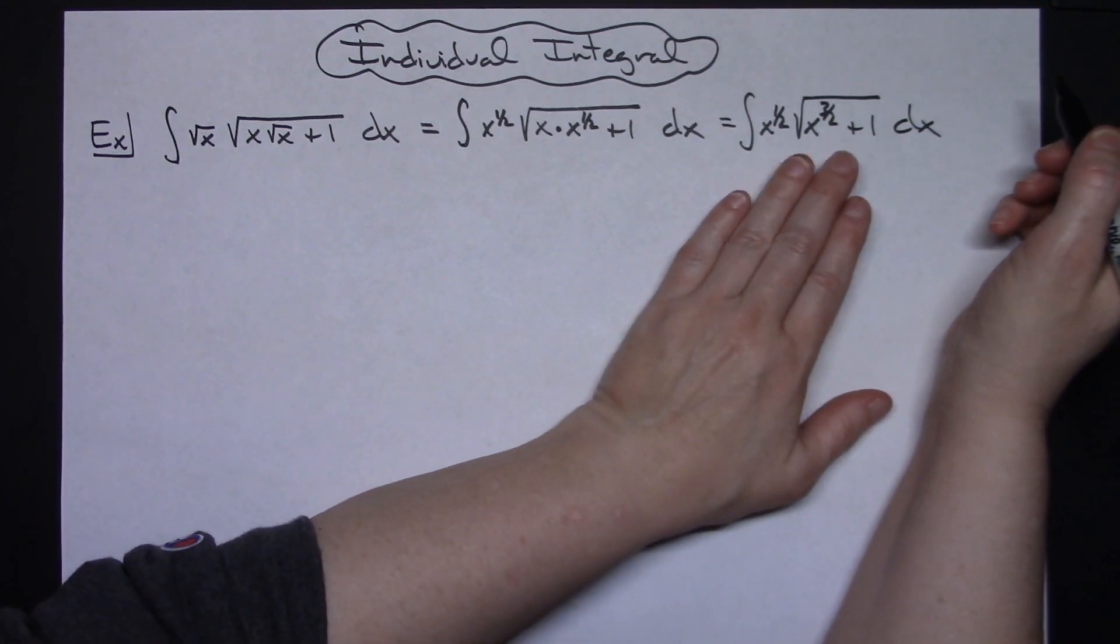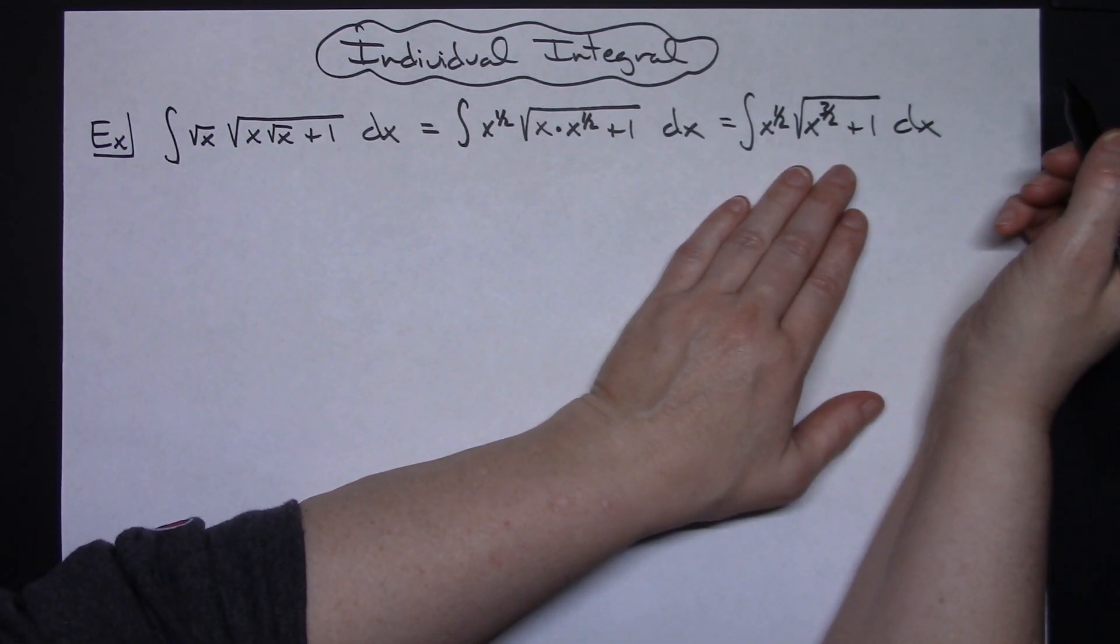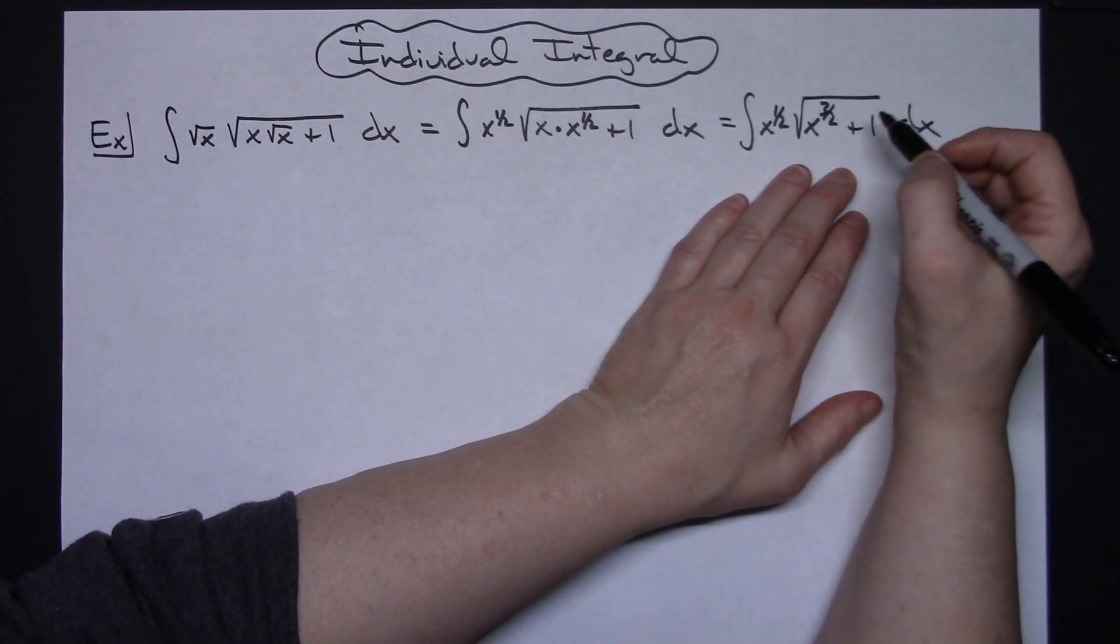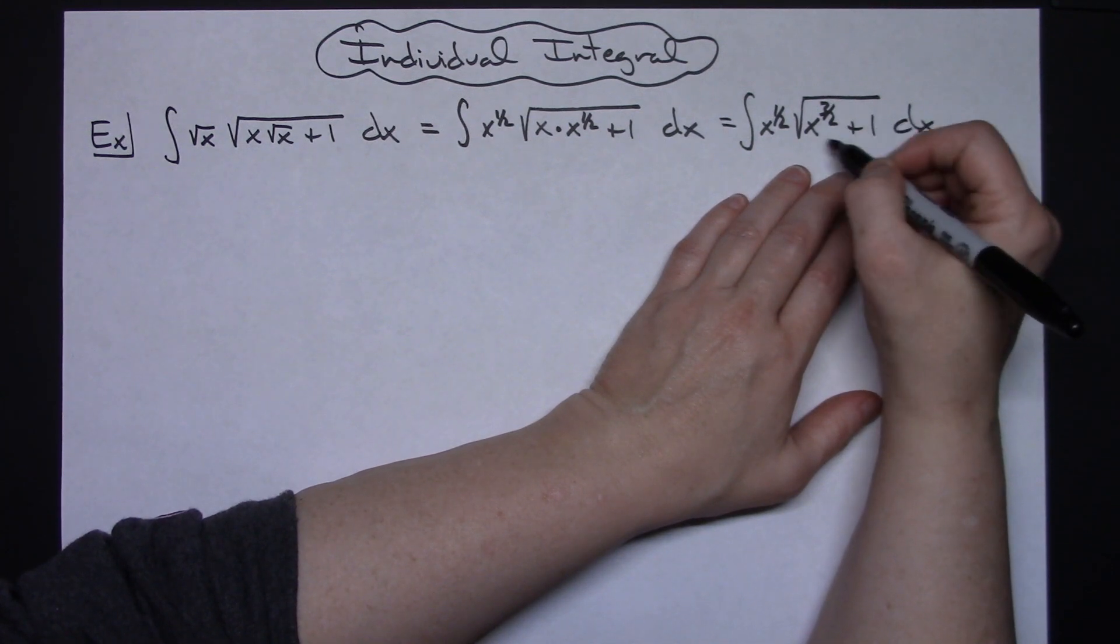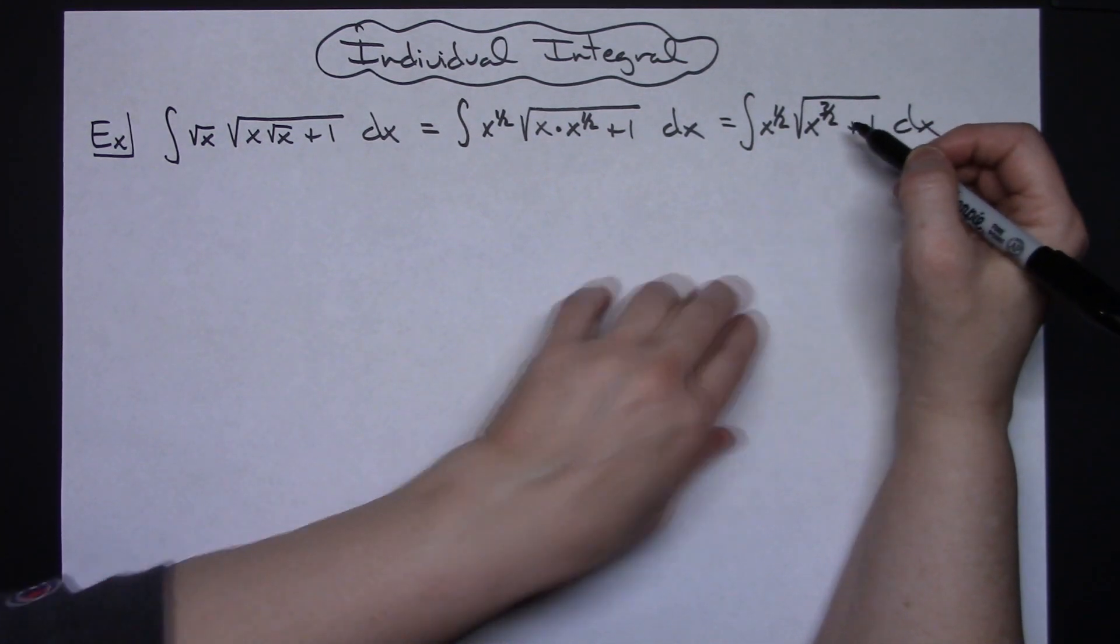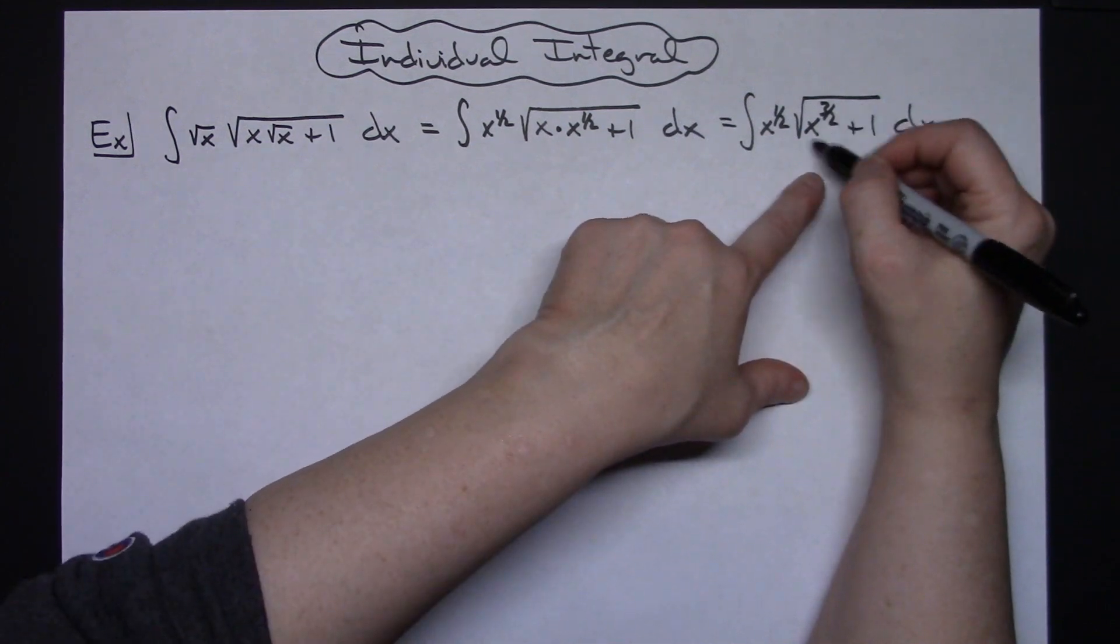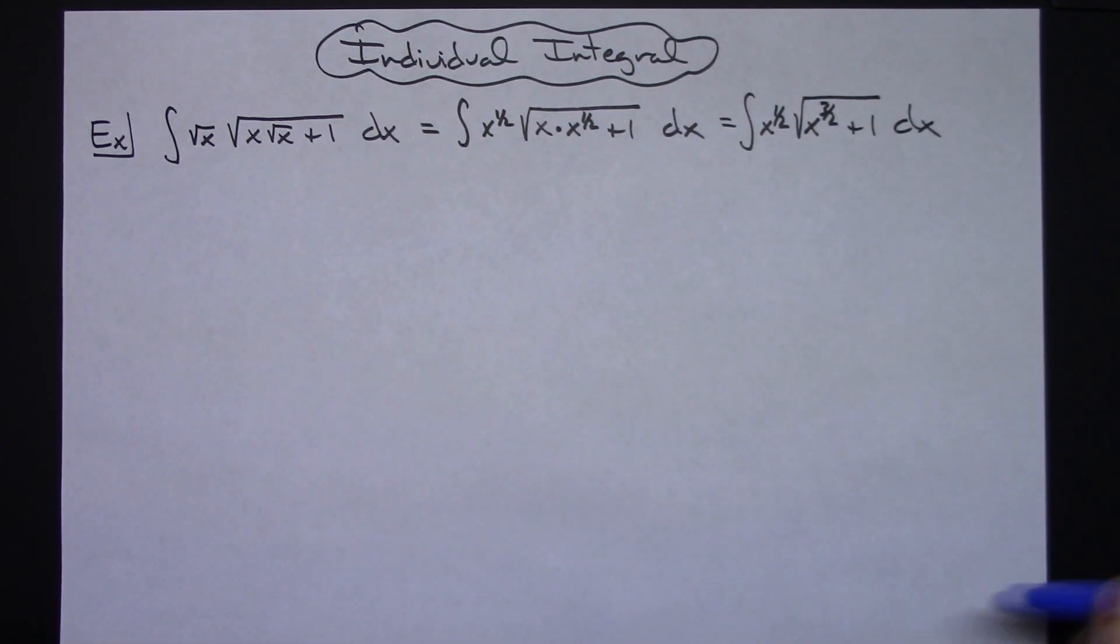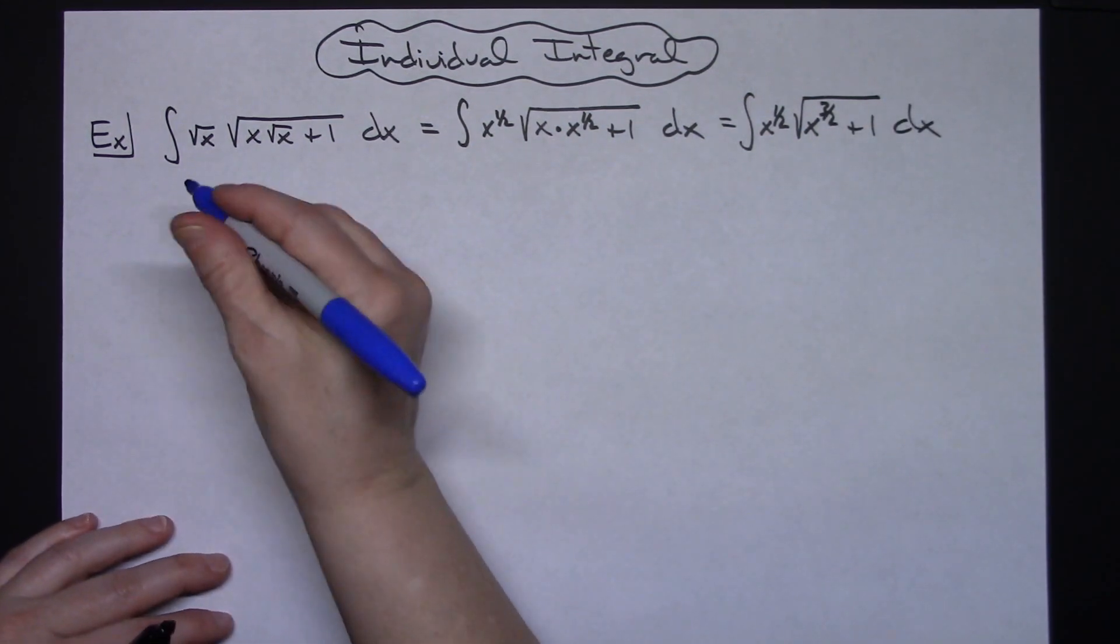Alright so now at this point I am ready to start my u substitution. I am going to let my u be that inside function because now the inside function doesn't look that bad. Okay so let's come all the way over here.